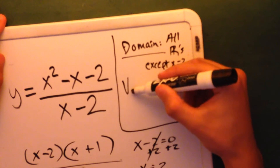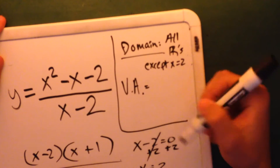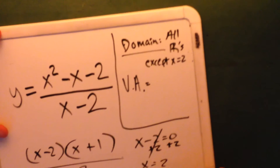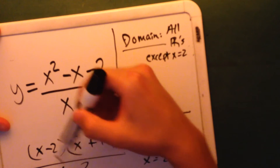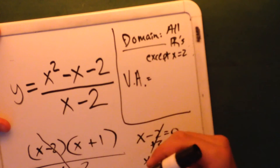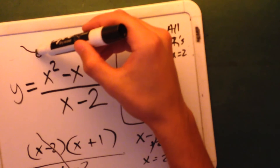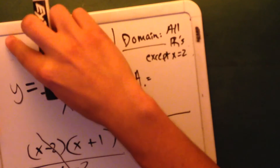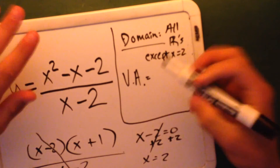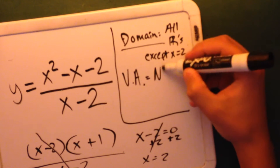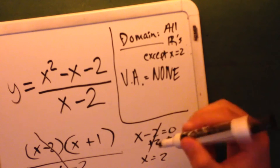Now we're going to find the vertical asymptote. There's (x minus 2) on the top and (x minus 2) on the bottom, so we're going to cross these out. That means we're going to have a hole — an open circle if you're graphing it. That's the point of discontinuity, which means we have no vertical asymptote — none. We're going to put none, and the point of discontinuity is at x equals 2.